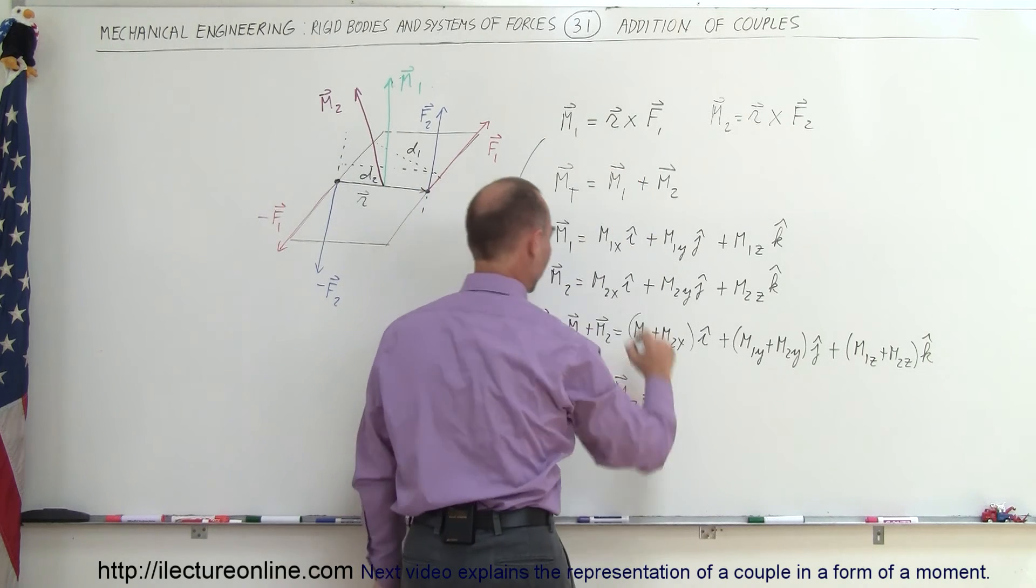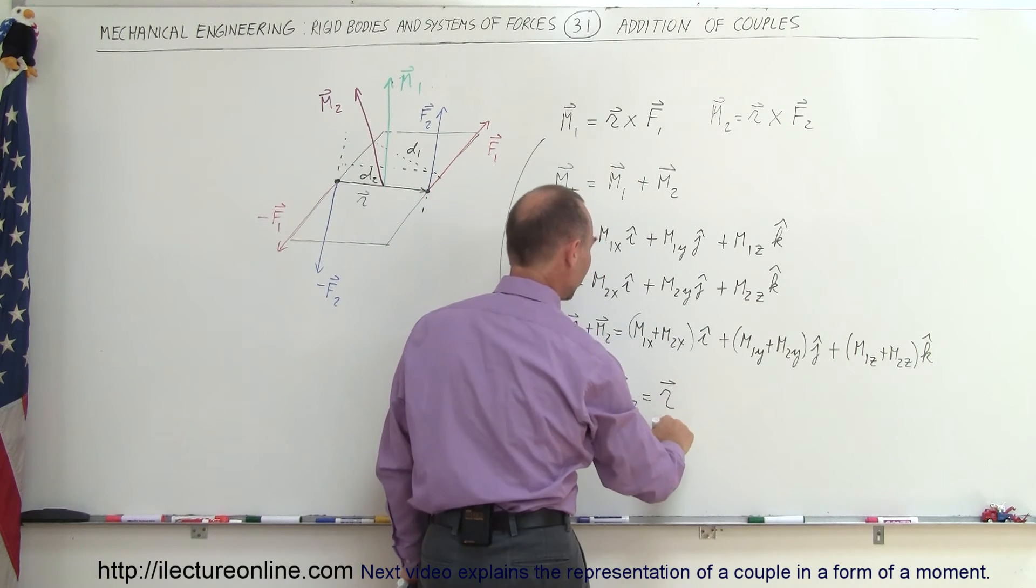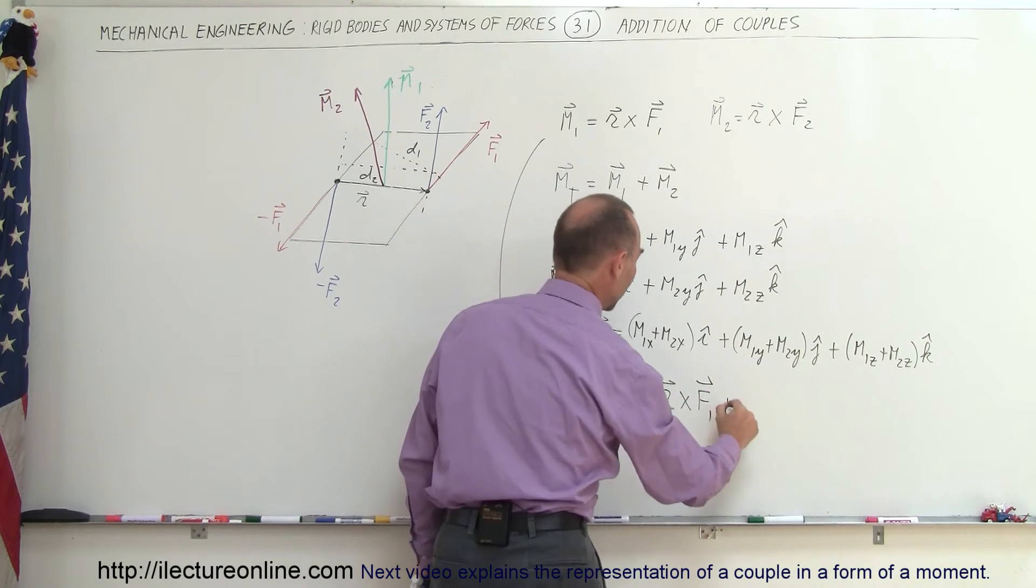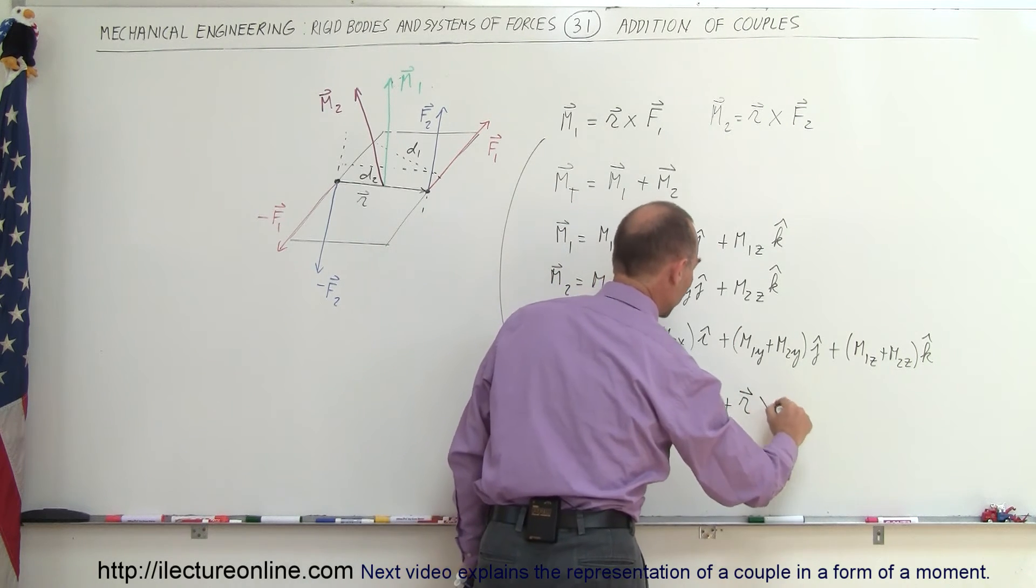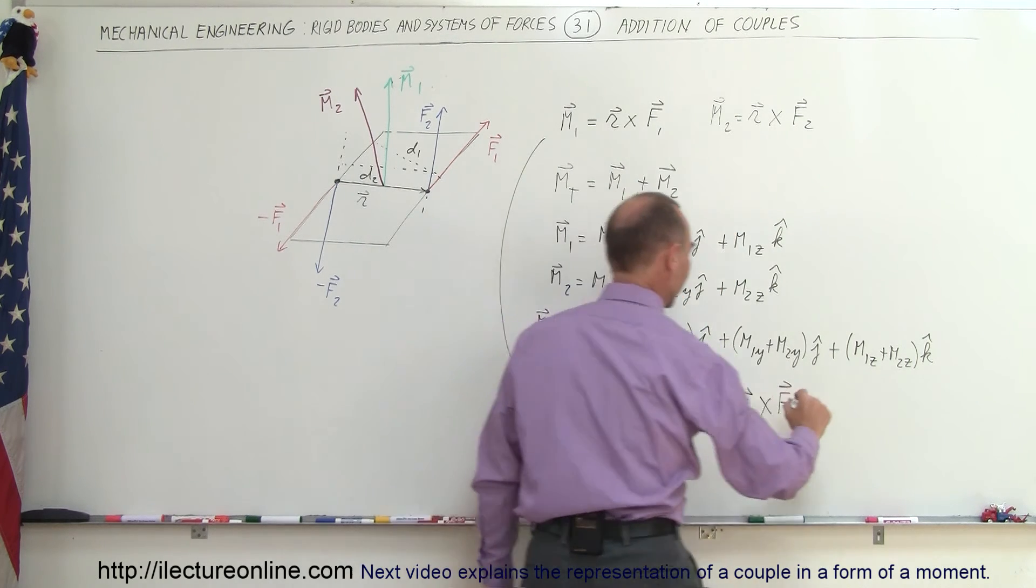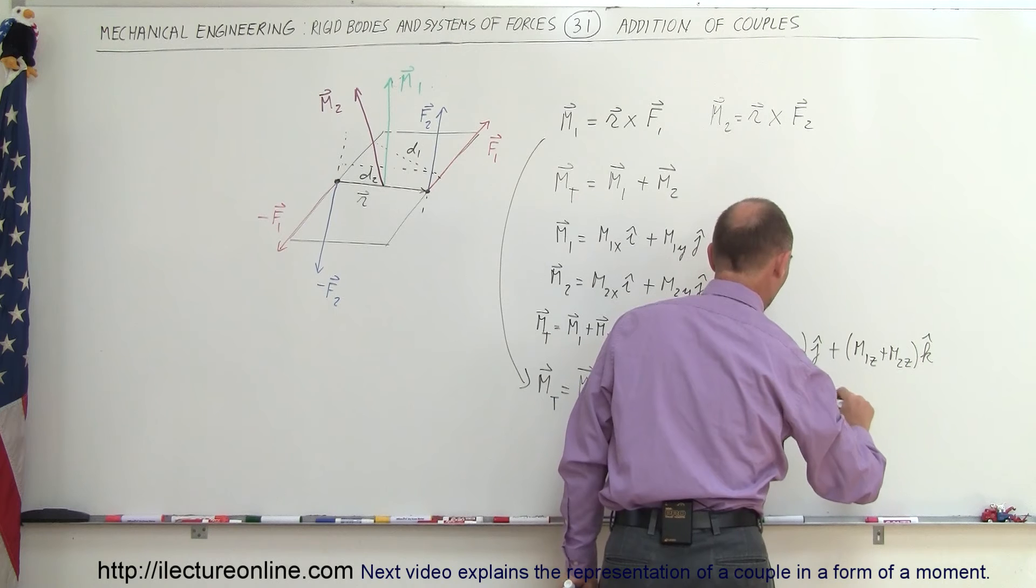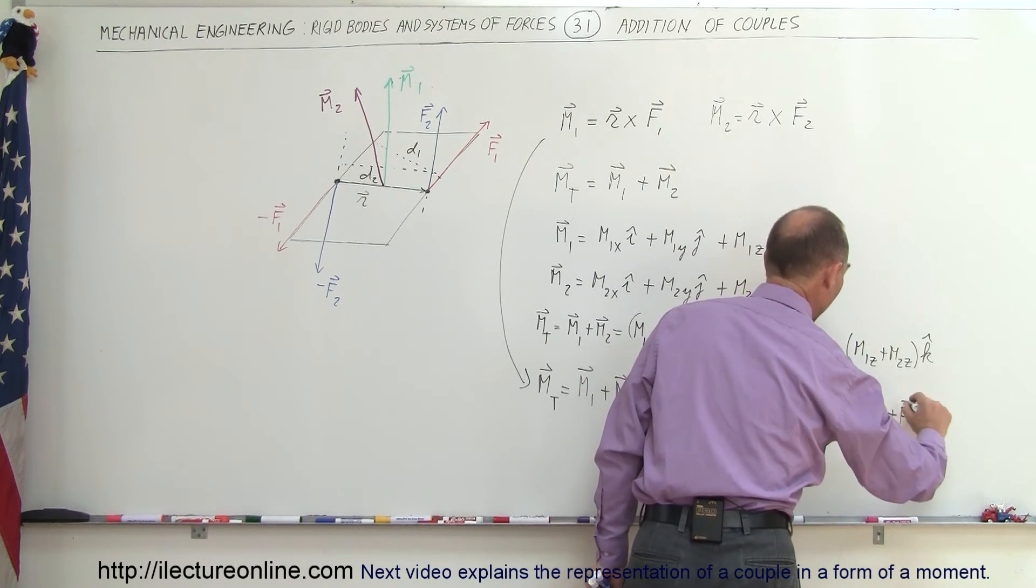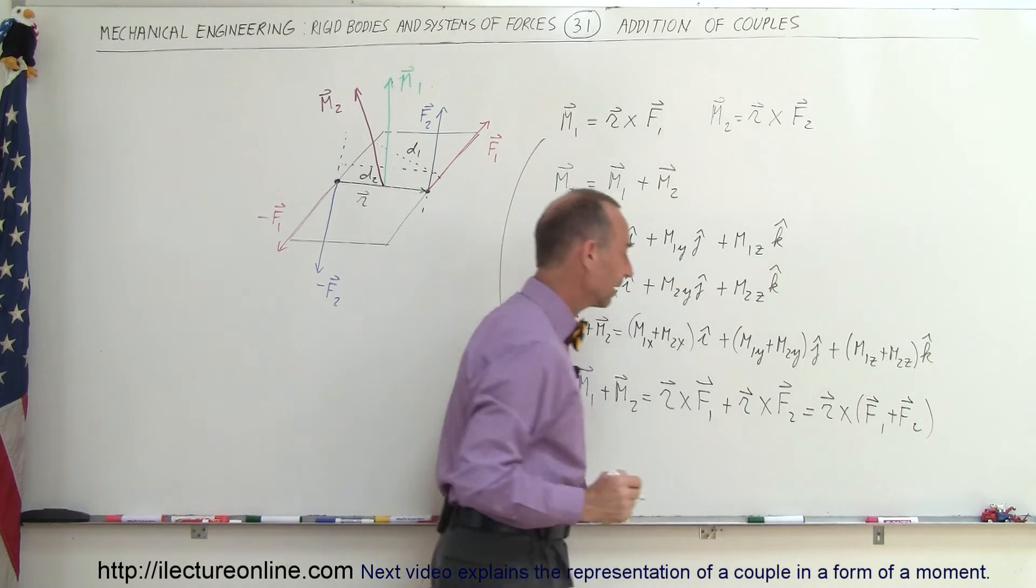that would be equal to the position vector, multiplied via the vector product with F1, plus the position vector, multiplied with F2, and so this can then be written as R, multiplied times the sum of F1 and F2, like that.